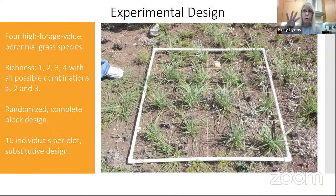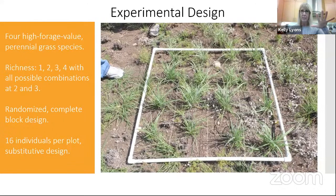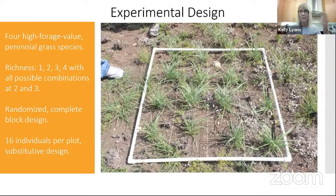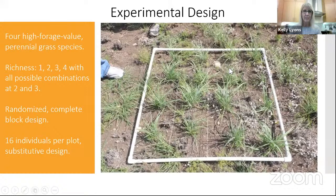We used four different species of grasses and designed an experiment with all possible richness combinations — one, two, three, and four species — and all possible treatment combinations: all species alone, all two-species combinations, three-species combinations, and all four species together. For those who know factorial designs, the number of replicates needed increases dramatically, which is why we could only use four species. We did a randomized complete block design with 16 individuals per plot, planted in a grid.